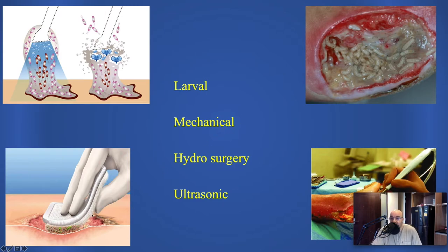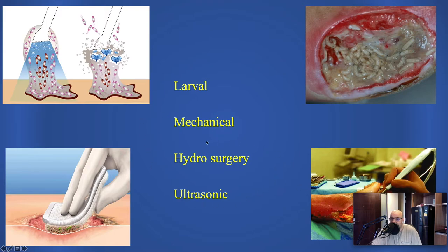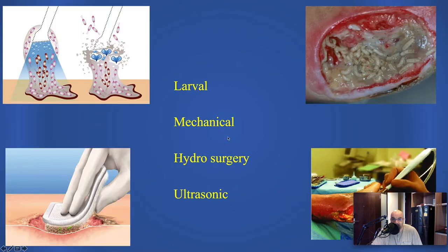Other less popular techniques include larval therapy, and mechanical debridement which is gaining more popularity. Previously, mechanical debridement was known to be applied by gauze; now there are special pads produced by many companies that can gently scratch the wound to remove bad tissue, being soft on the good tissue while defragmenting the unwanted tissue. Hydrosurgery and ultrasonic debridement require specialized techniques and well-trained people, most likely performed in hospitals or specialized clinics.